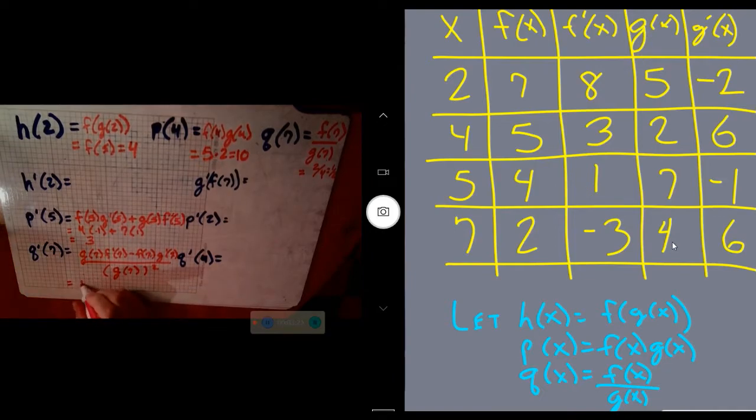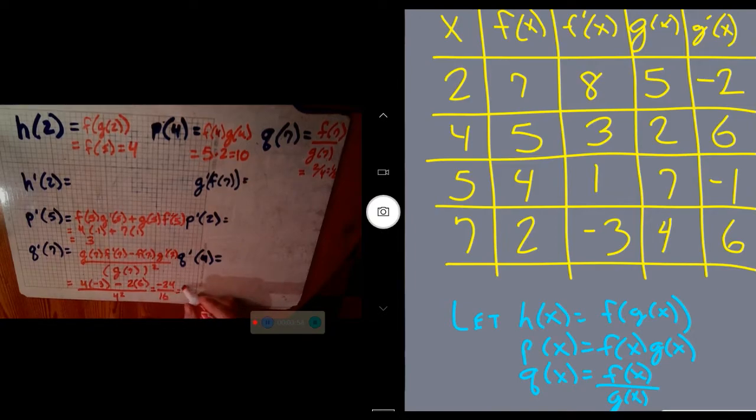If I go one at a time: g(7) is 4, f'(7) becomes -3. Minus f(7) is 2. g'(7) is 6. All over low squared. g(7) was 4, and we're squaring that. If I simplify, I get -12 and -12 again. So -24 on top over 16. That simplifies to -3/2 for your fraction.